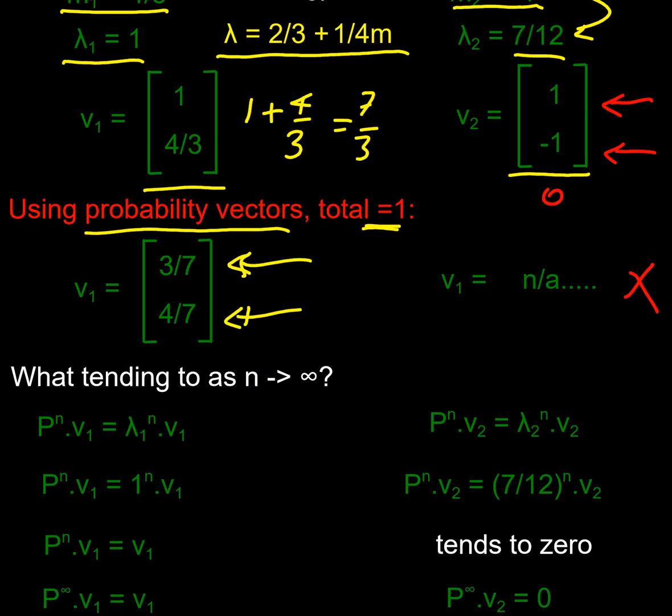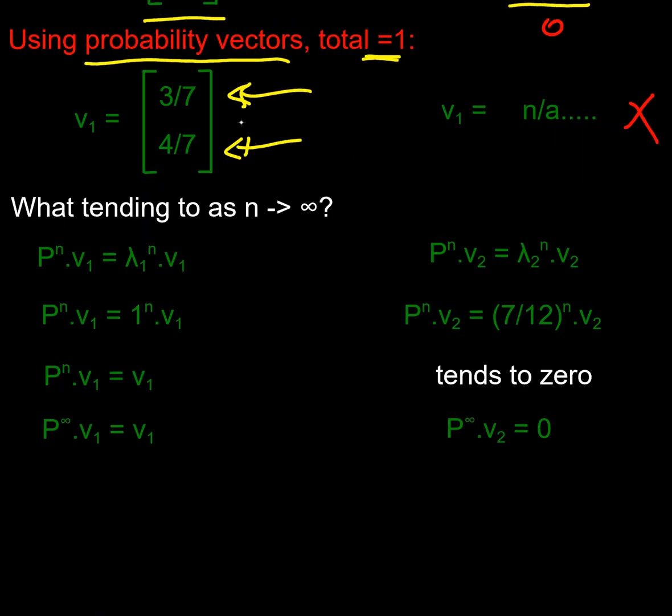Now my next question is what happens to these vectors as the number of days, as we tend to the future, as t tends to infinity or n tends to infinity? If I took P^n v1, well that's going to be the same as lambda one to the power n times v1. Lambda one was one, one to the n is one, so I would get P to the n times v1 is just going to be v1. So P infinity, as I go off into infinite time, that one's just going to tend to v1.